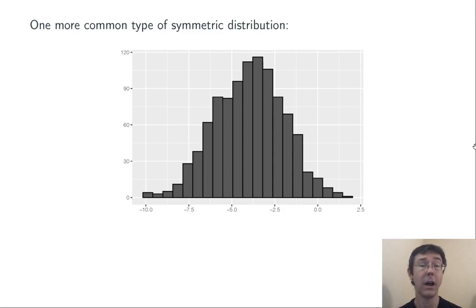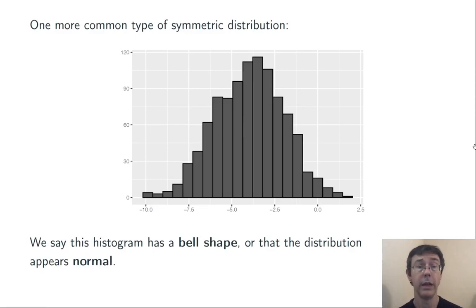Another very common sort of symmetric distribution is the bell curve or the normal distribution. We'll be running into this a great deal throughout our study of statistics. We don't mind small fluctuations away from the bell shape on each side, as long as we can detect that overall pattern.